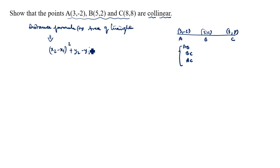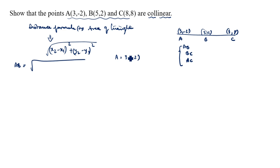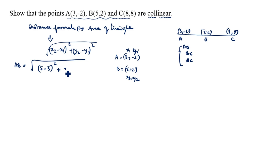Now we will find AB. AB = √(...). A is (3, -2), so x1 = 3, y1 = -2. B is (5, 2), so x2 = 5, y2 = 2. That gives us √((5 - 3)² + (2 - (-2))²).